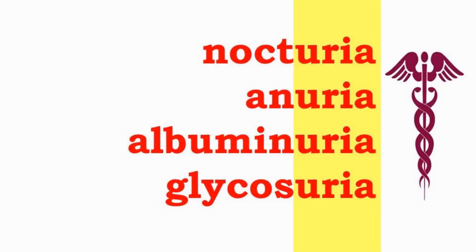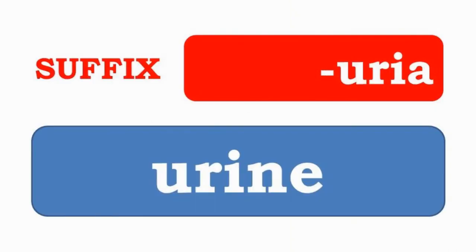Nocturia, anuria, albuminuria, and glycosuria have the suffix -uria, which indicates that they pertain to urine.